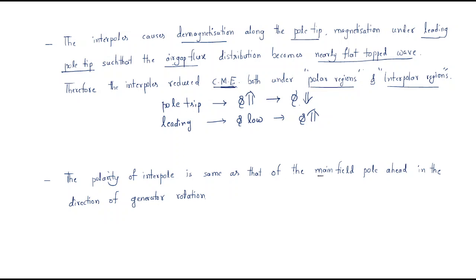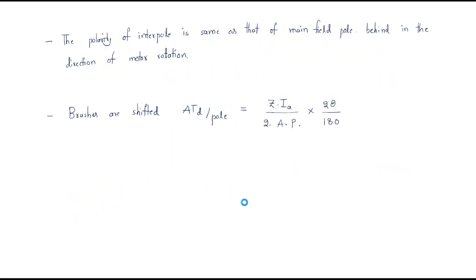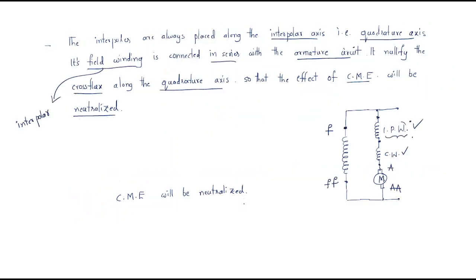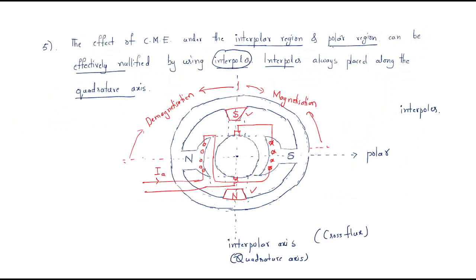The polarity of the interpole is the same as that of the main field pole ahead in the direction of generator rotation. If the main field poles are ahead in the direction of generator rotation, the north pole is here and the south pole is here. This completes the session on remedies of cross-magnetizing effect.